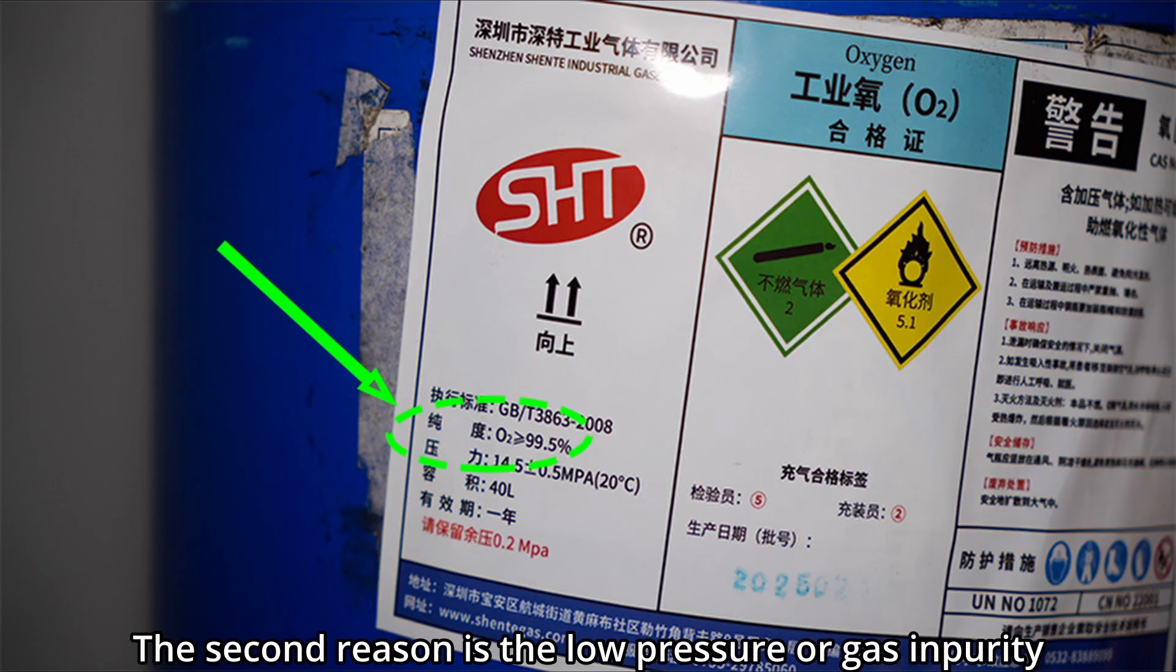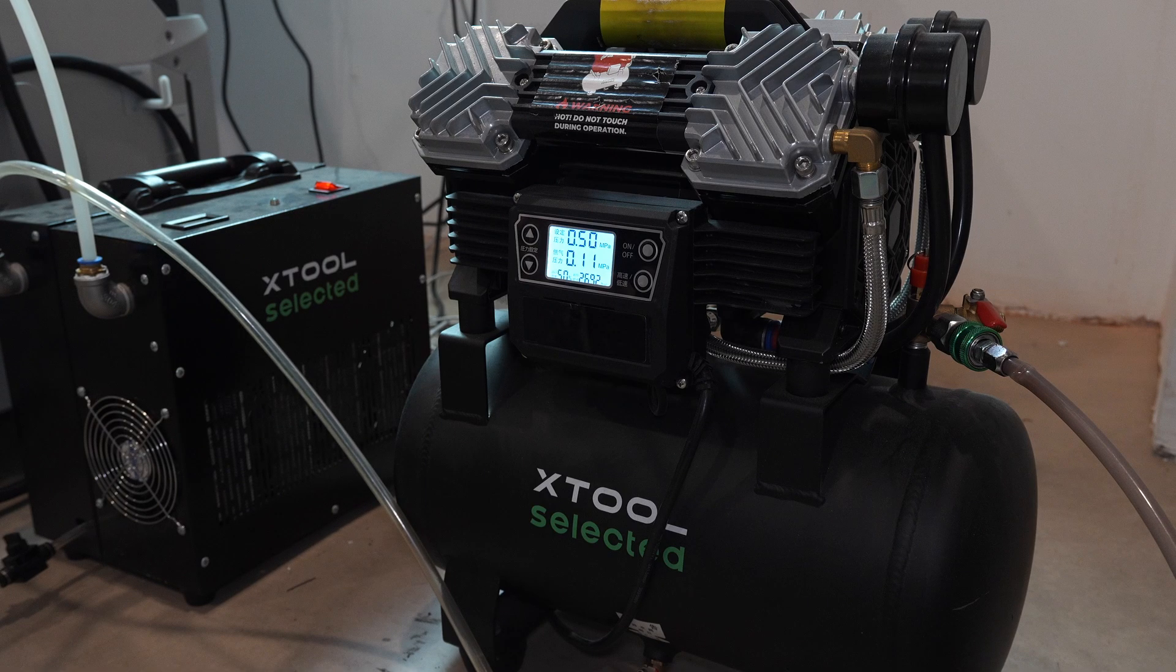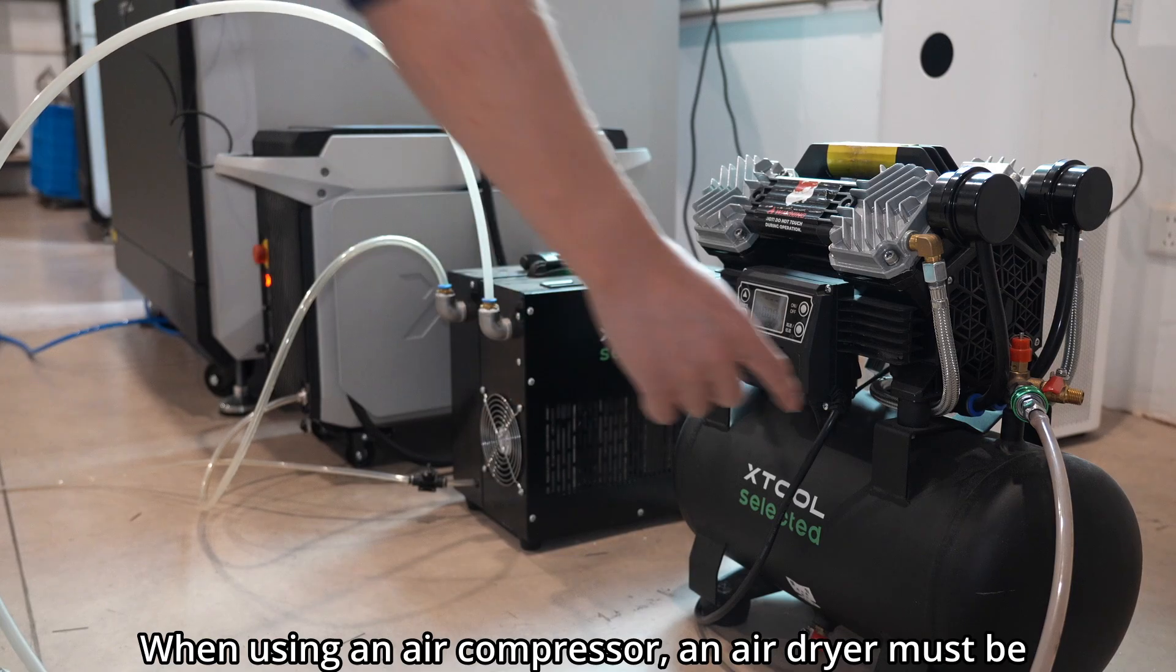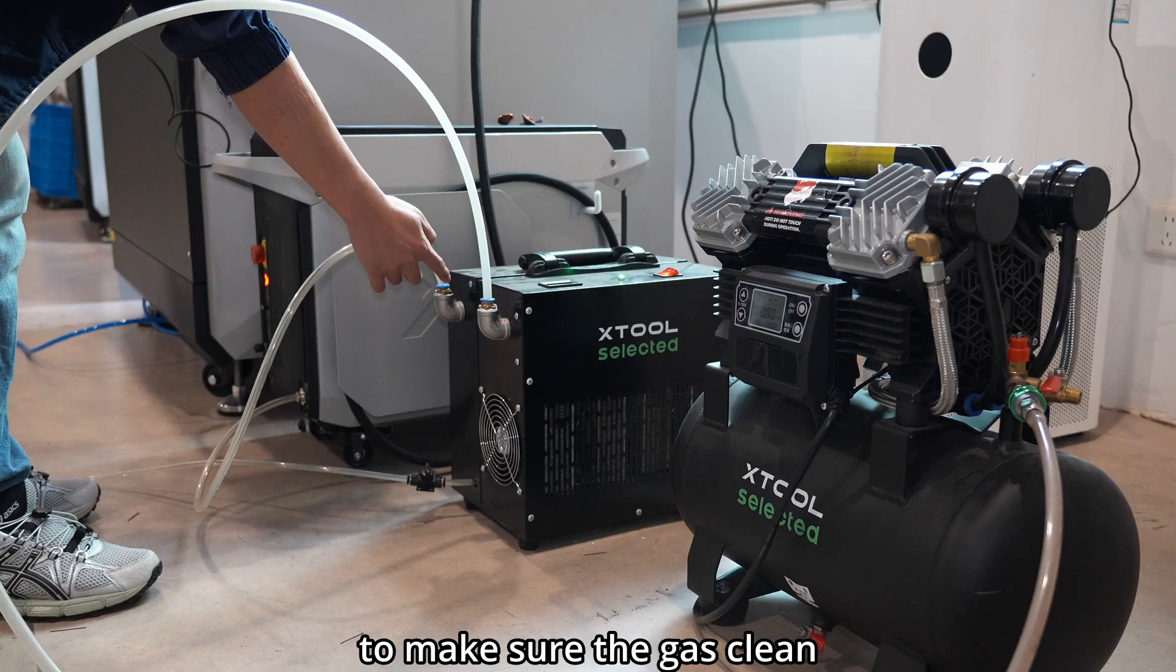The second reason for dross is low pressure or gas impurity. If using oxygen, nitrogen or argon, ensure gas purity is greater than or equal to 99.99%. When using an air compressor, an air dryer must be installed between the air compressor and the equipment to make sure the gas is clean.